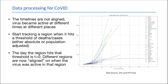You've likely seen graphs tracking death rates or case rates in various places, often plotted on a log scale. A key aspect of these graphs is that the timelines are not aligned — the virus reached different places at different points in time. The way to bring them together is to pick a threshold in terms of deaths or cases, either absolute or population-adjusted, and start tracking a region when it hits that threshold.